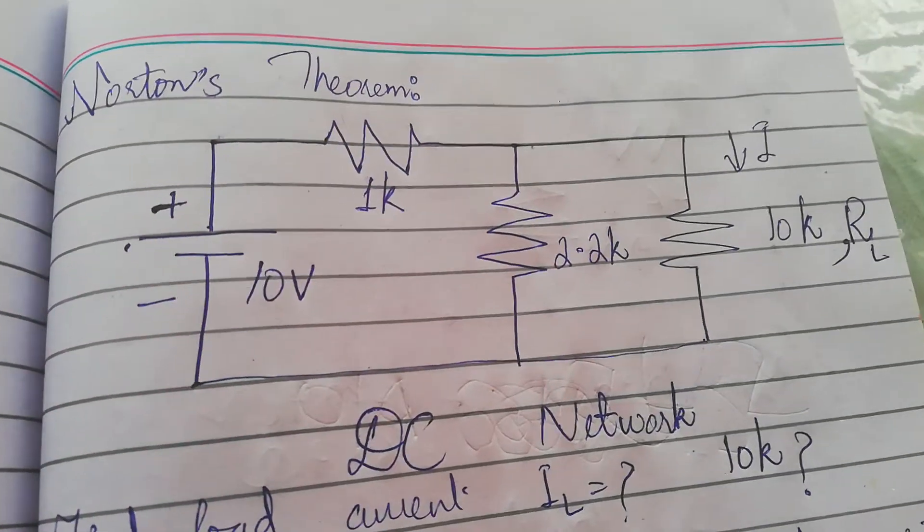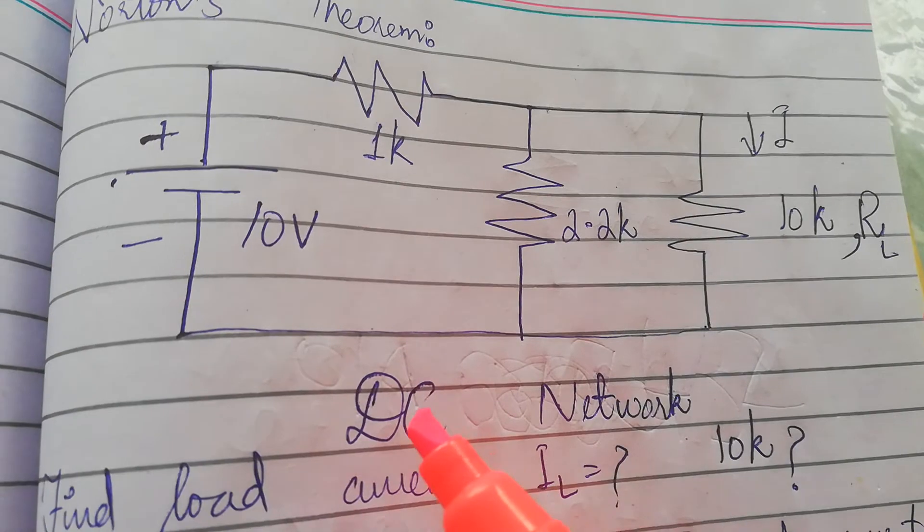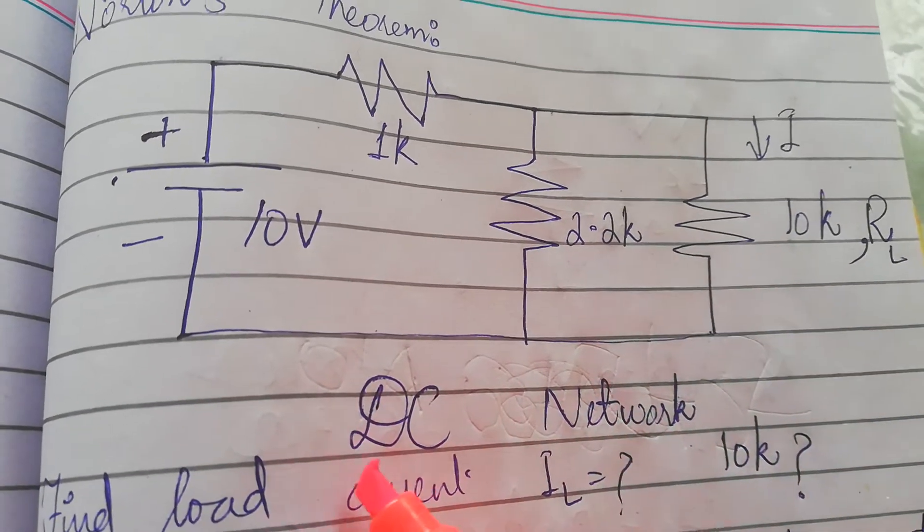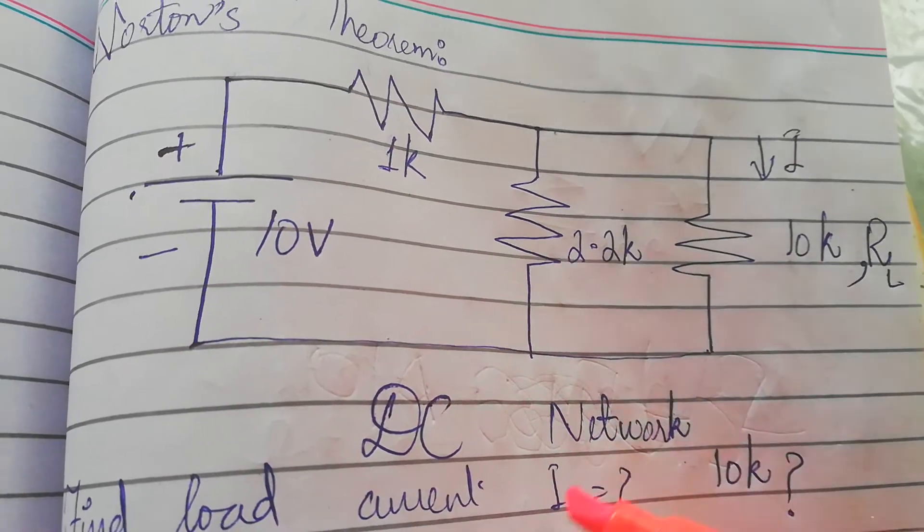Today the topic is LCA lab Norton's theorem. We have a circuit given, this is the DC network circuit. The DC network has a battery and resistors.